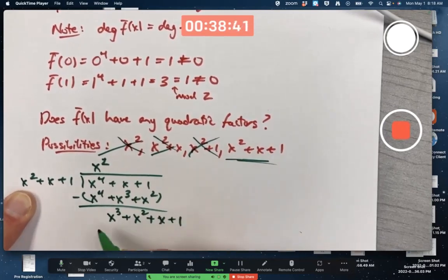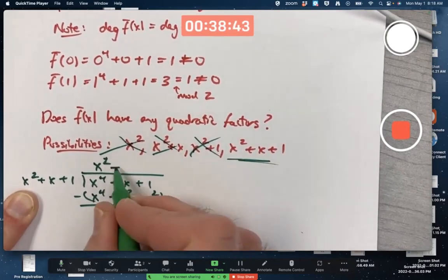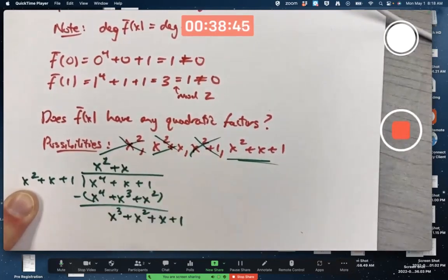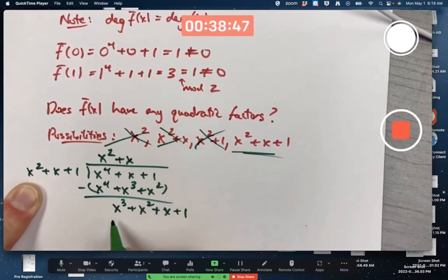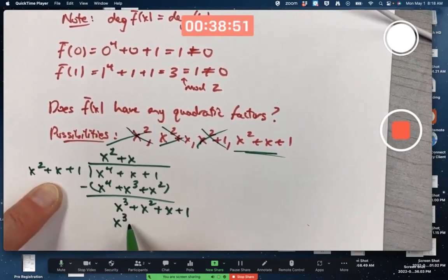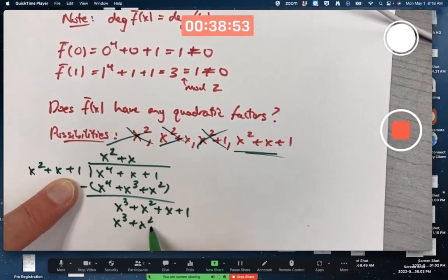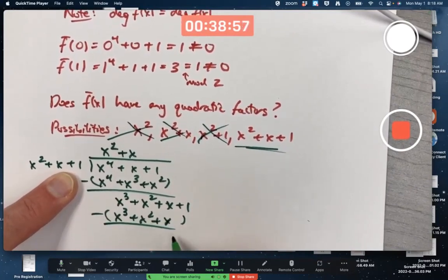What do I multiply x squared by to get x cubed? I multiply it by x. So that's the next term in the quotient. And if I do the multiplication, x times x squared is x cubed, times x is x squared, times 1 is x. Subtract. Everything cancels except the 1.